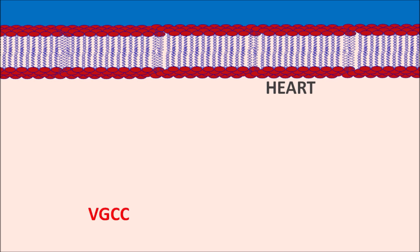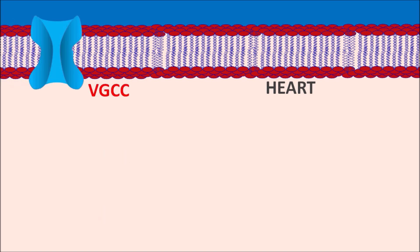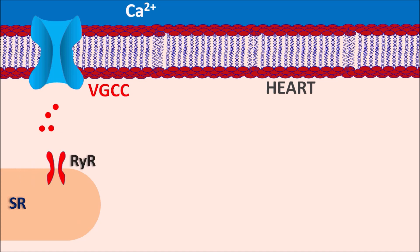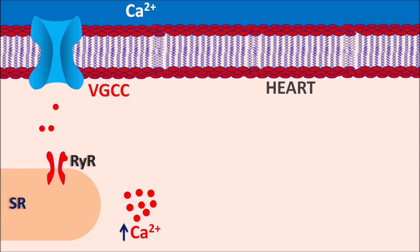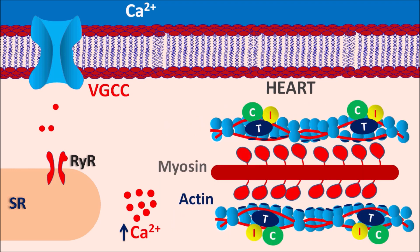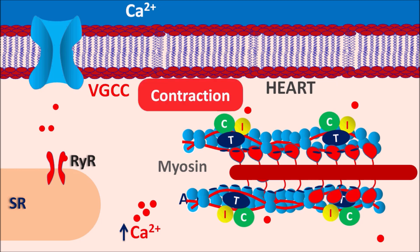How does this drug act? One site of action is on the heart. Voltage-gated calcium channels play an important role in cardiac contraction. When cardiac cells are depolarized, calcium enters through voltage-gated calcium channels and stimulates calcium stores in the sarcoplasmic reticulum via ryanodine receptors, releasing a large amount of calcium. This raised intracellular calcium binds to the troponin complex, allowing actin and myosin to slide, producing contraction of the cardiac muscle.